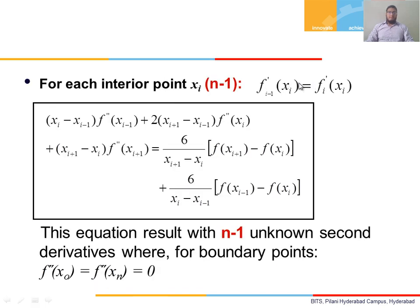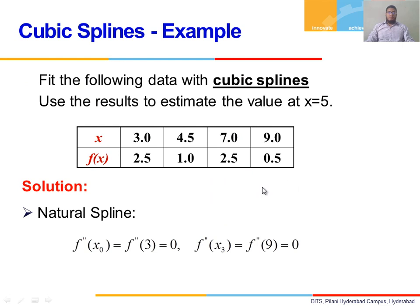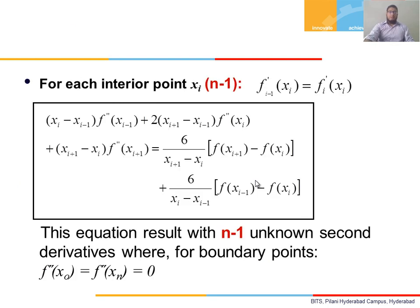If we apply the differentially continuous equation, we obtain another equation. Using this, we arrive at n+1 unknowns and n-1 equations. To solve this, we require certain conditions called endpoint conditions. These endpoint conditions are generally taken as the second derivatives at the endpoint nodes being equal to 0. This type of condition is called the natural spline condition.